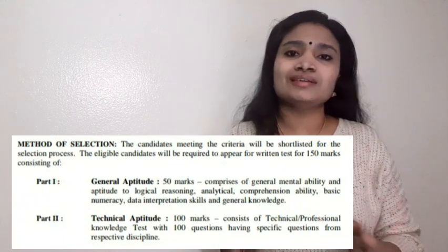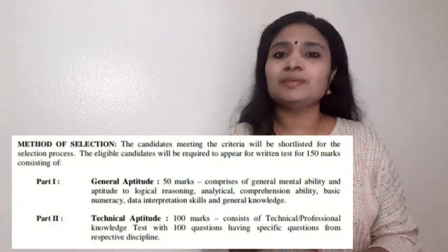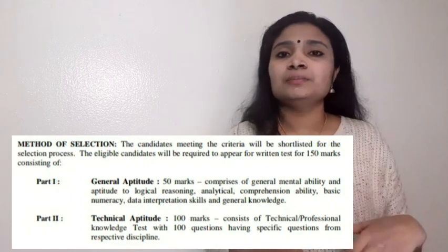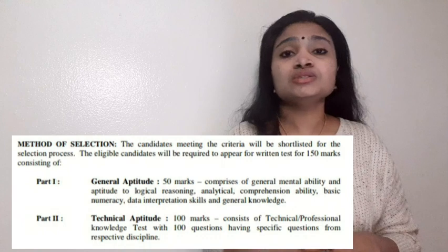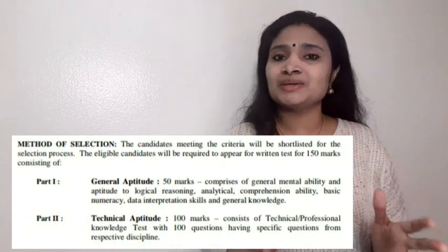In this video we are going to see the syllabus of the engineering assistant trainee recruitment. There is a written examination in the selection process, and it will be an objective type examination. There will be two sessions — Part A consisting of the generic area covering reasoning and aptitude, and Part B comprising your technical subject from whichever diploma branch you belong to.